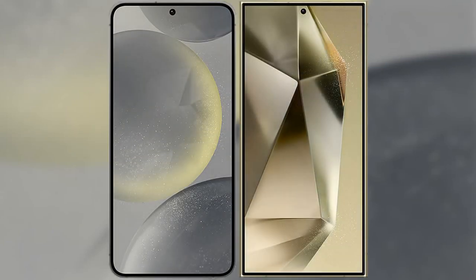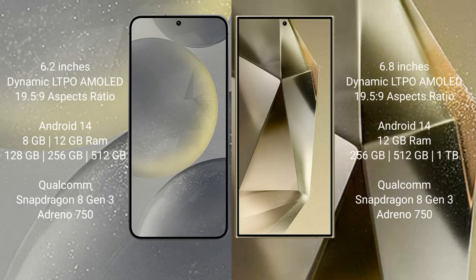I will compare the new Samsung Galaxy S24 with Samsung Galaxy S24 Ultra. Samsung S24 has a 6.2 inch dynamic LTPO AMOLED display with aspect ratio 19.5:9. Samsung Galaxy S24 Ultra comes with a 6.8 inch dynamic LTPO AMOLED display and aspect ratio 19.5:9.